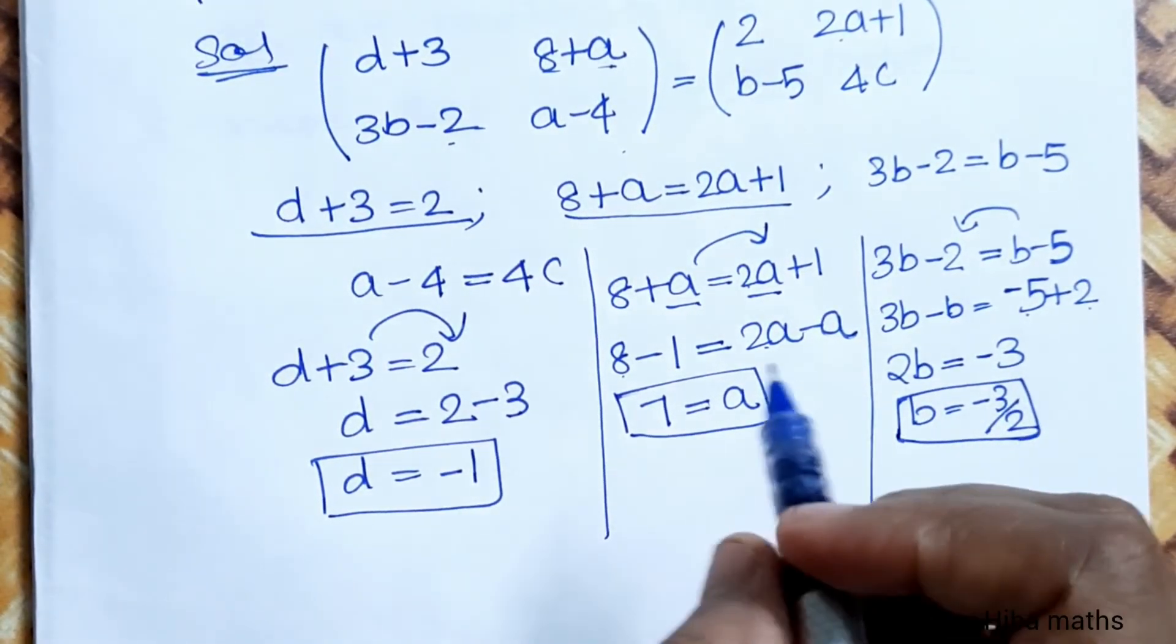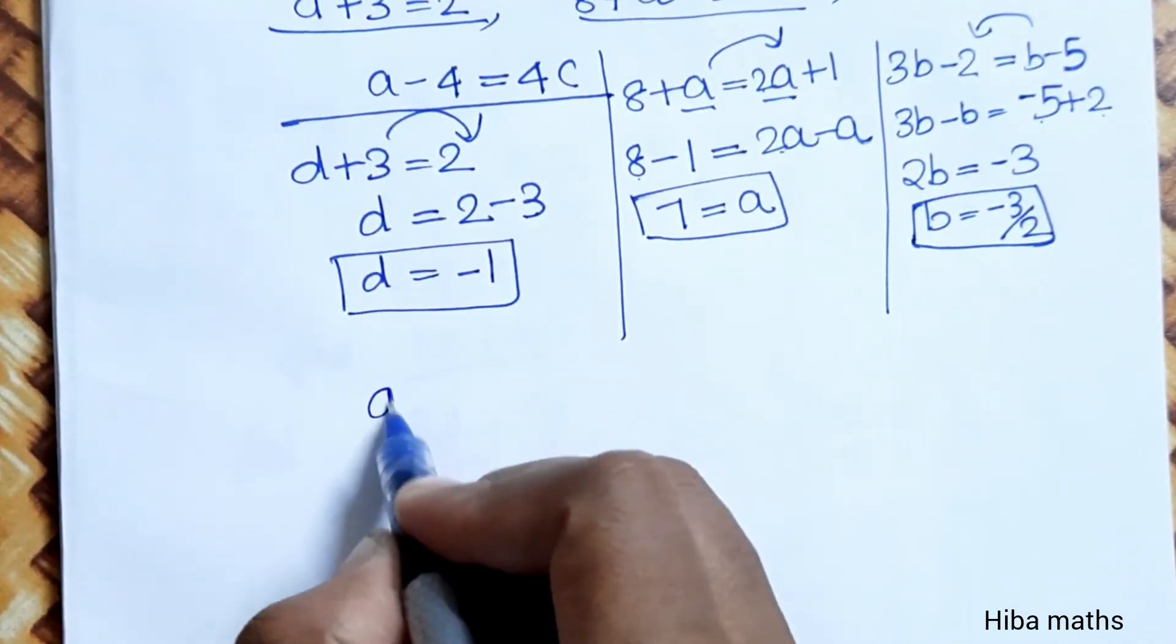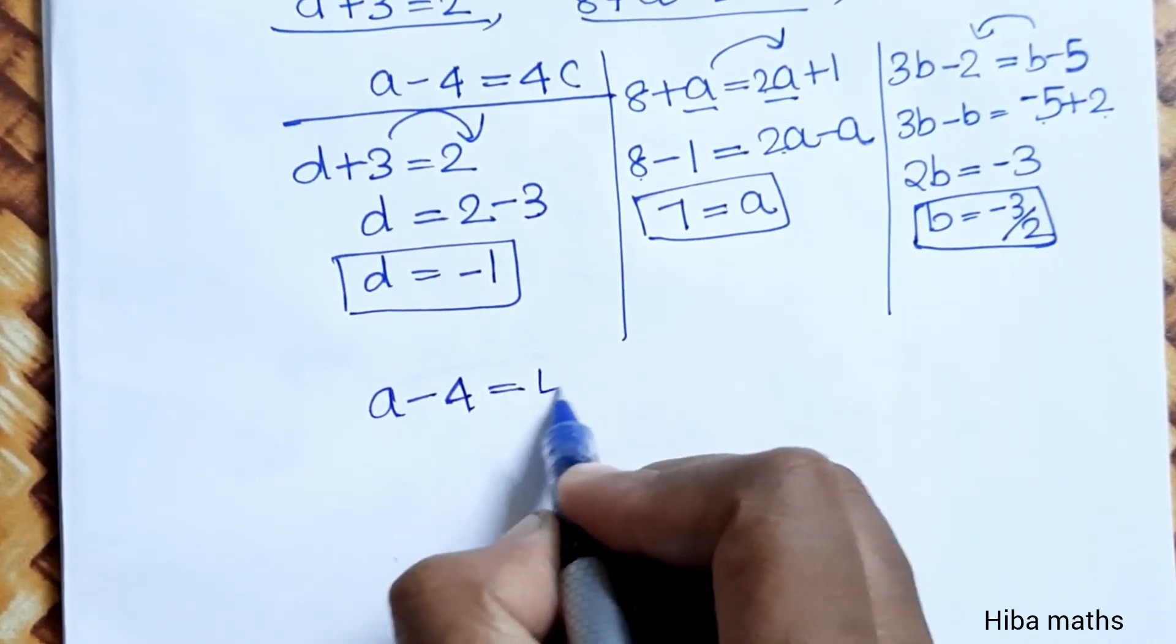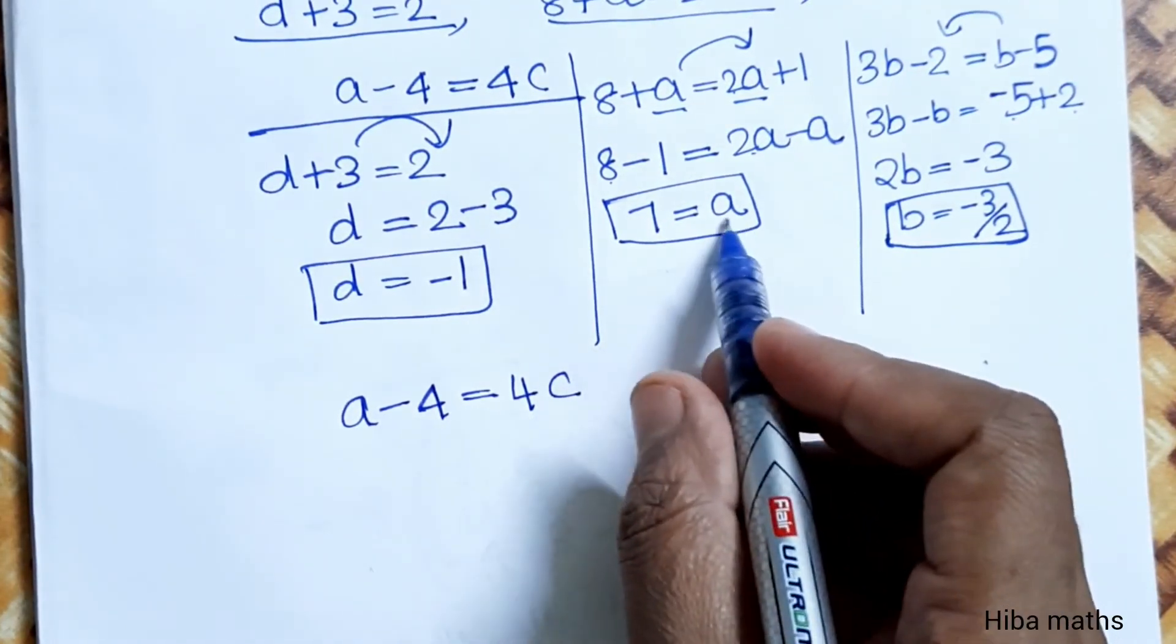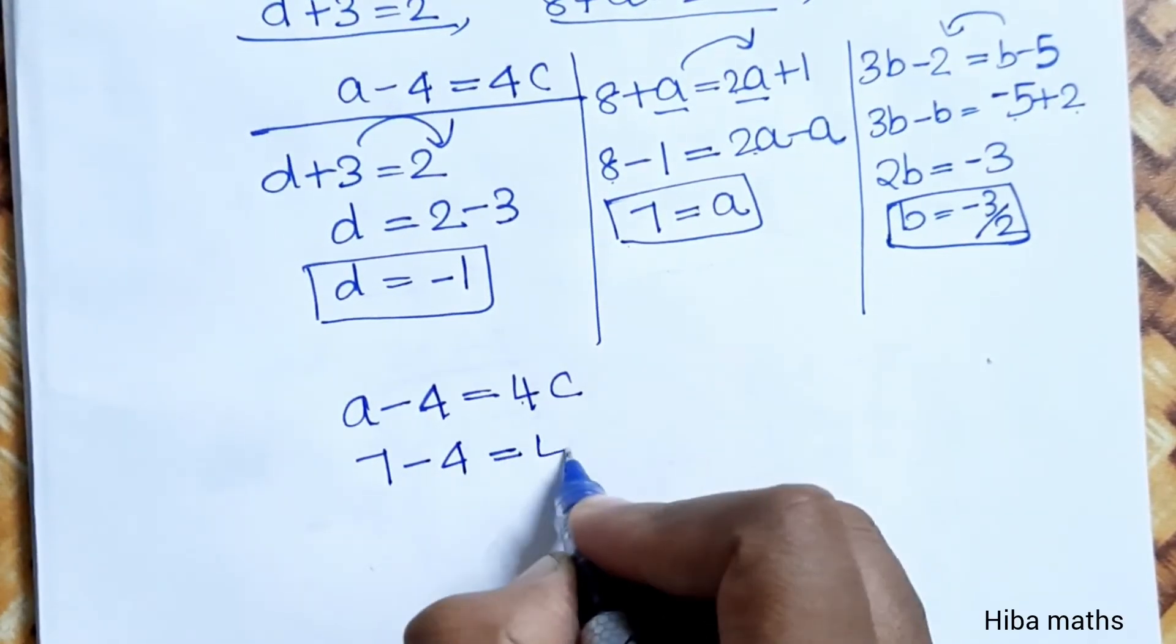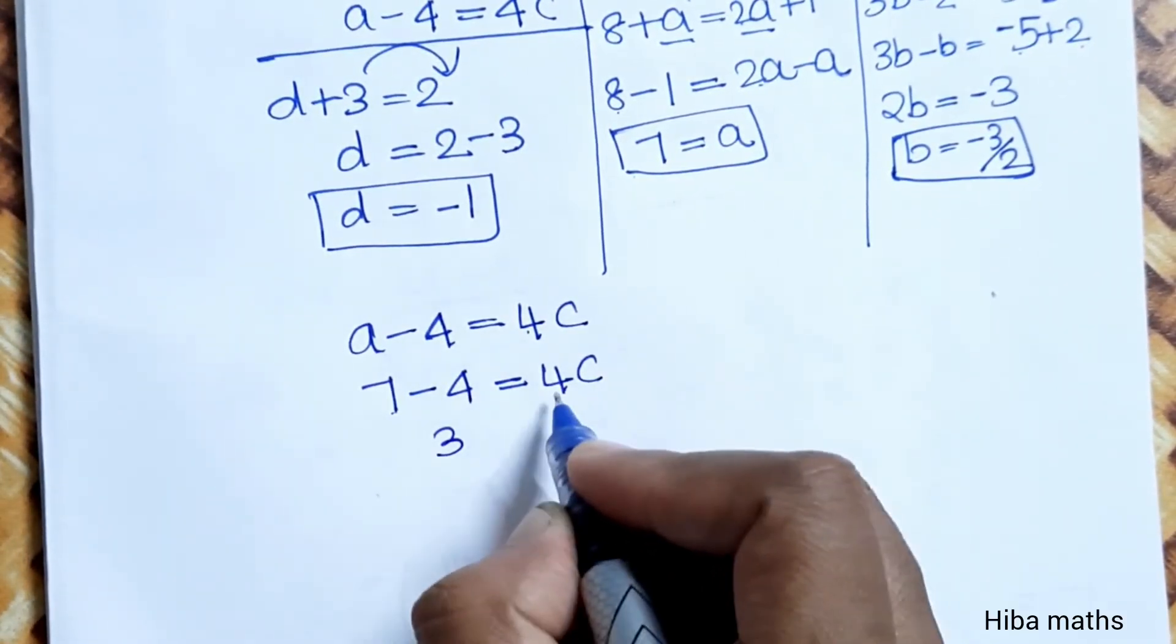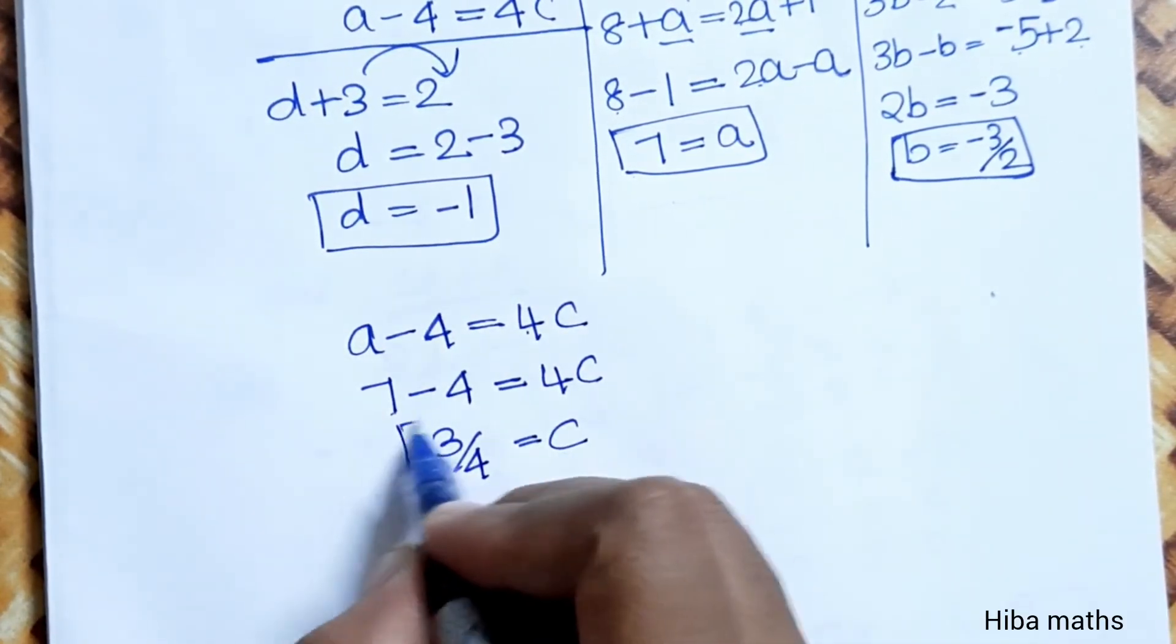A minus 4 is equal to 4C. A value is equal to 7. 7 minus 4 is equal to 4C. 7 minus 4 is equal to 3. So 3 is equal to 4C.